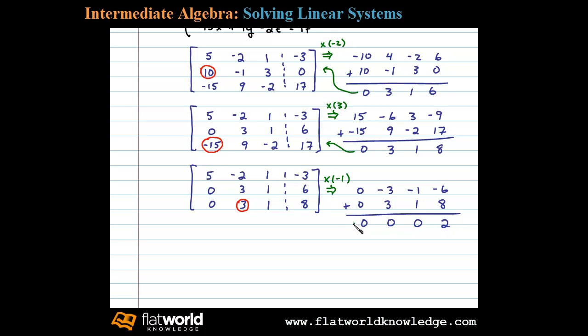This leaves us with a matrix in upper triangular form. Now I notice the third row represents coefficients of 0 and a constant of 2. When this is the case, we can recognize that the original system is inconsistent.